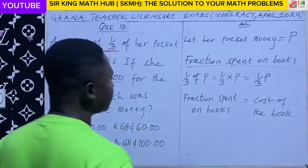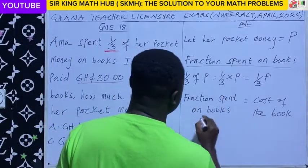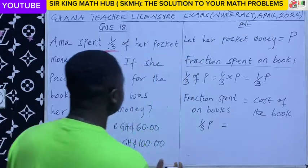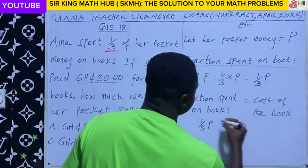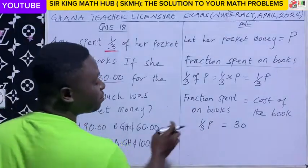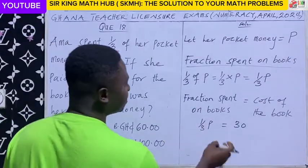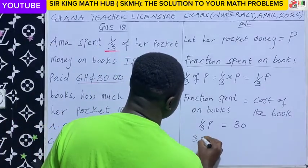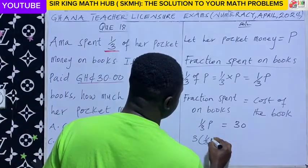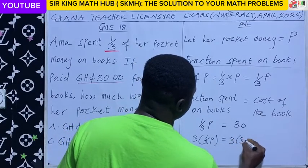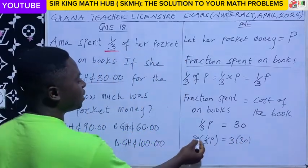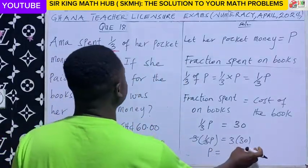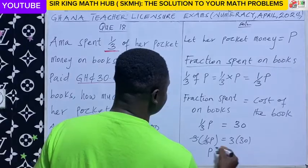So with this, we can set up the equation. We know that she spent one third of her pocket money, so one third P should be equal to the cost of the book, which is 30 cedis. We are solving for P. The LCM here is 3, so we multiply each term by the LCM. The 3 cancels out, leaving P equal to 3 times 30, which is 90.